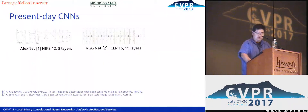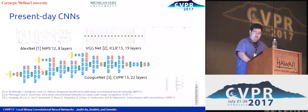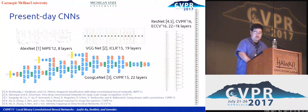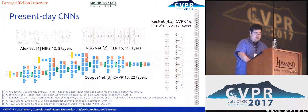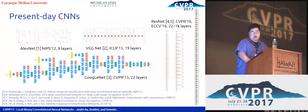CNNs are overwhelmingly powerful with abundant training data and abundant computational resources. But what about training CNN models in a resource-constrained environment, where the resource being constrained is data or computation?